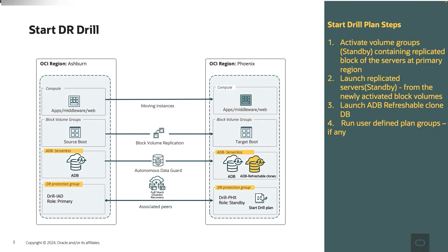Once we create a start drill plan type, these are the plan groups and steps that will be automatically created. We'll have steps for activating the volume groups from the primary region to the standby region. Once the volumes are replicated and started, we'll create a virtual machine automatically from the newly activated block volumes. We also launch an autonomous database refreshable clone database. And if you have customized your plan with any user-defined groups, those will also be executed.